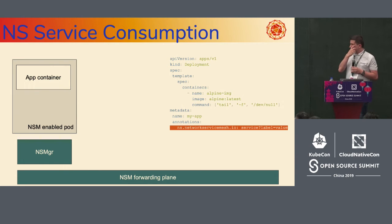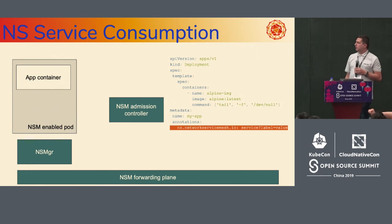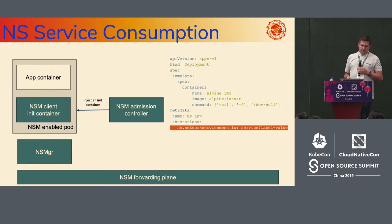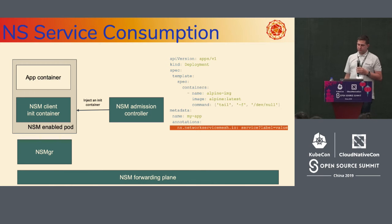For network service consumption, if you have an application container and want to run it in an NSM-enabled pod, all you have to do is use our annotations format. An NSM admission controller processes the deployment at pod creation time, figures out what the service is, and injects an init container that takes care of injecting the interface and ensuring smooth connectivity. This is the easiest way — you don't even have to change your application. We also have an SDK that you can incorporate directly into your application for more advanced management of services and connections.